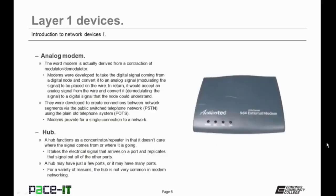Let's talk about analog modems. The word modem is derived from a contraction of modulator-demodulator. Modems were developed to take a digital signal from a digital node and convert it to an analog signal, modulating the signal and placing it on a wire. In return, it would accept an analog signal from the wire and convert it — demodulating the signal — back to a digital signal the node can understand. Modems were developed to create a connection between network segments via the public switched telephone network using the plain old telephone system. Modems provide a single connection to a network and are only concerned about the wire, which resides on the physical layer, layer 1 of the OSI model.